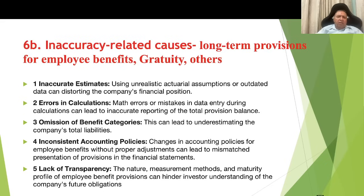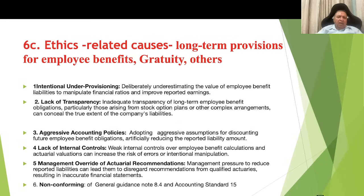Inaccuracy-related causes for long-term provisions for employee benefits like gratuity and LTC: inaccurate estimates — using unrealistic actuarial assumptions or outdated data can distort the company's financial position; errors in calculation; omission of benefit categories; inconsistent accounting policies — changes in accounting policies for employee benefits without proper assessment can lead to mismatched presentation of provisions in the financial statements; and lack of transparency.